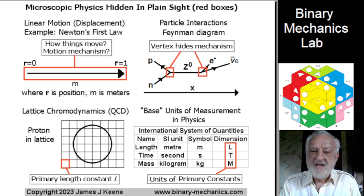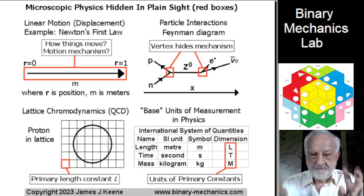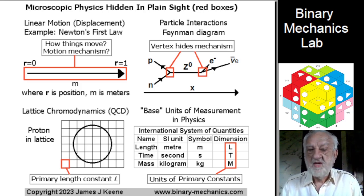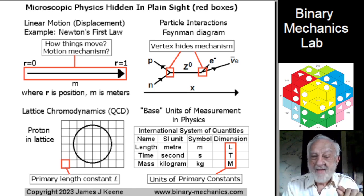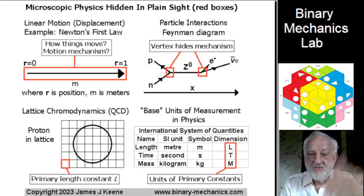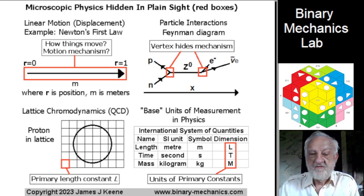Binary mechanics has successfully documented that these secondary constants, based on three primary constants, L, T, and M, perhaps ironically, map directly to the base units of measurement used in physics.